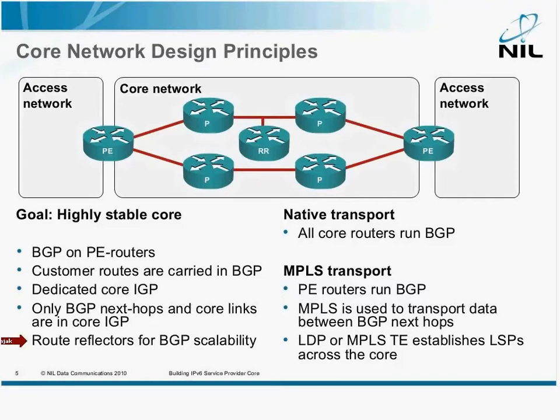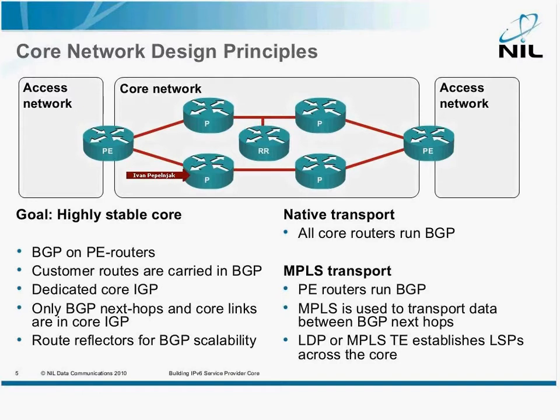Now, as with IPv4, you have two options. Either all your core routers run BGP, because if you run IPv6 natively, then every single router in the path has to know all the IPv6 prefixes, so that it can decide whether to send the packets left or right. So if you have native IPv6 transport, then all the core routers need all the routes, so they have to run BGP.